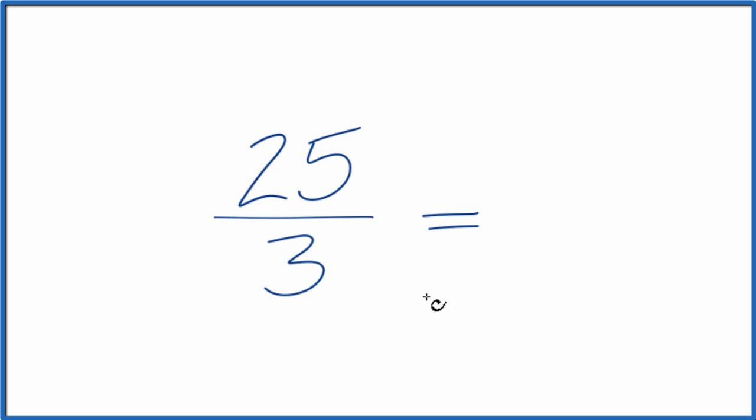That's the greatest common factor. So if we divide 25 by 1, we get 25. Divide 3 by 1, we get 3. 25 thirds. And that's what we started with.